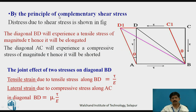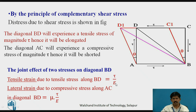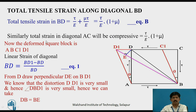The correct answer is by the principle of complementary shear stress. In the distorted body diagram ABC1D1, diagonal BD experiences tensile stress of magnitude tau and gets elongated, whereas diagonal AC experiences compressive stress and gets shortened. The total strain along diagonal BD is the sum of both strains: tensile strain due to tensile stress along BD is tau/E, and lateral strain due to compressive stress along AC is mu × tau/E. So total strain = tau/E × (1 + mu).